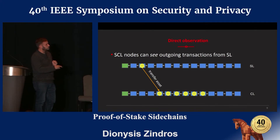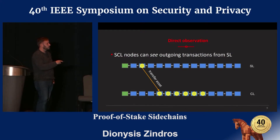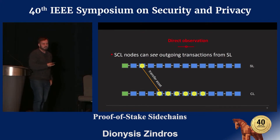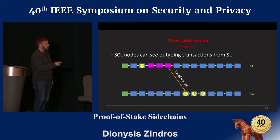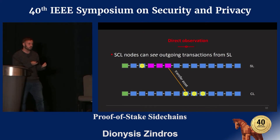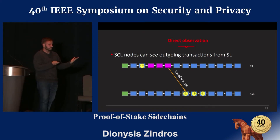The first approach is called the direct observation method. If you have an SCL node that monitors both blockchains, it's easy for them to verify that a money creation transaction is actually valid. The reason is they monitor both blockchains: they can wait for confirmation on the top blockchain for the money destruction transaction, wait a couple of blocks for confirmation, and after that they can verify the money creation transaction at the bottom. By direct observation, this is basically trivial.